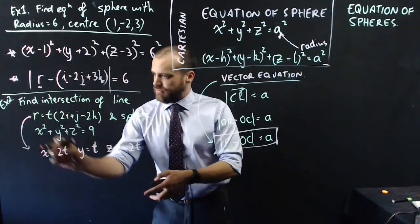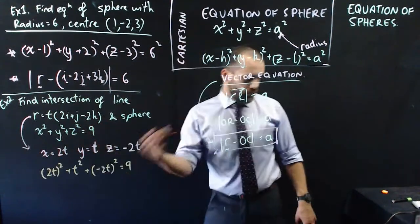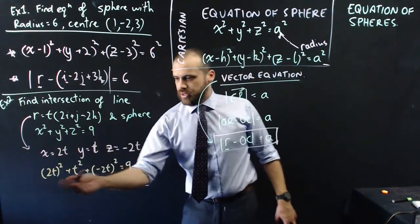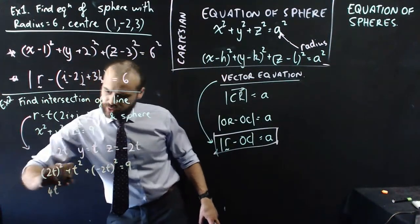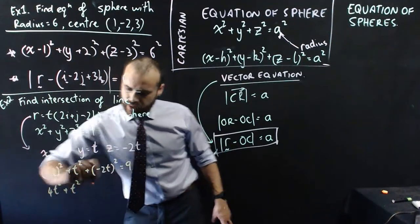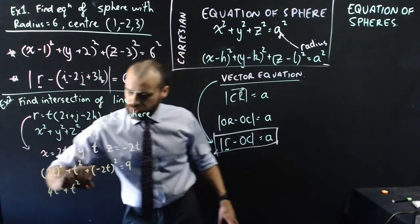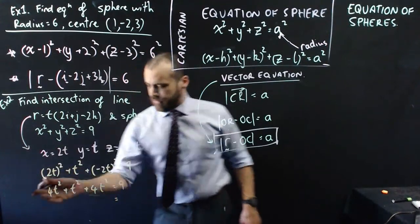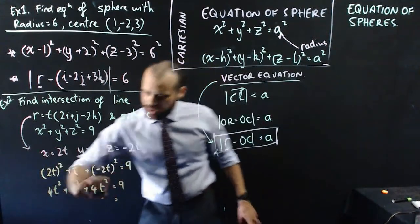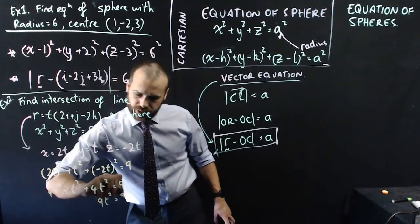Subbing those in for x, y, and z, we get something that looks like that. When we expand it, we get 2 squared, which is 4, and then t squared, plus t squared. Negative 2 squared is 4, so we get plus 4t squared equals 9. Add them all together, we get 9t squared equals 9.